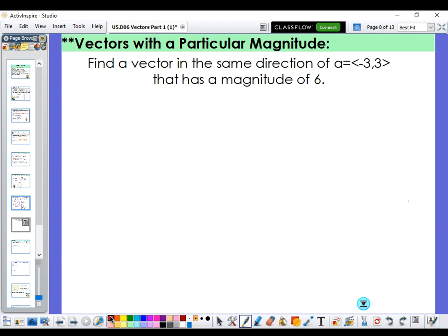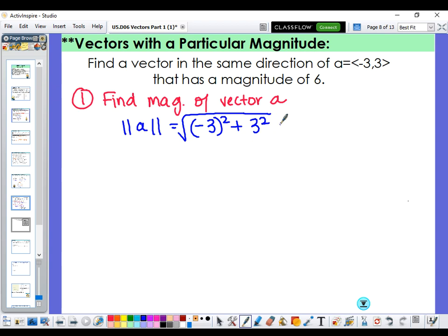So what we need to do first is we need to find the magnitude of the original vector, just like we did before. So we'll do that by taking vector A, calculating its magnitude. So we've got negative 3. We'll square it. Positive 3 squared as well. Added together. And then square root it. So we get 9 plus 9, which is the square root of 18.